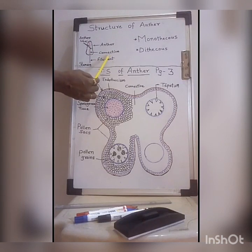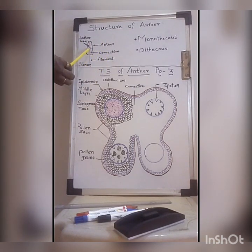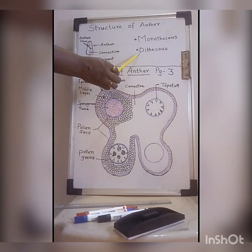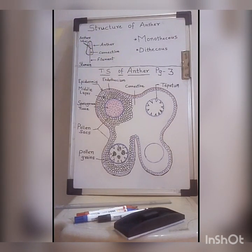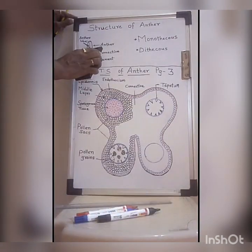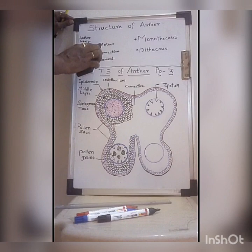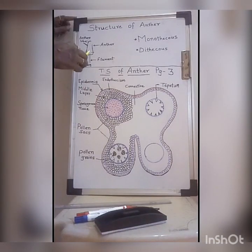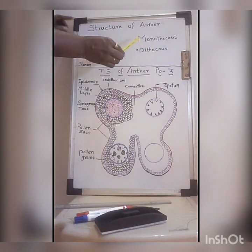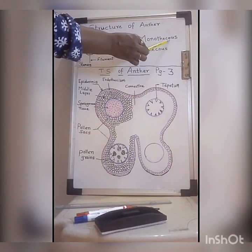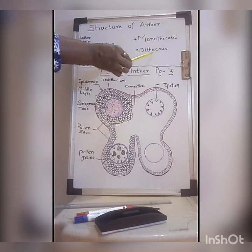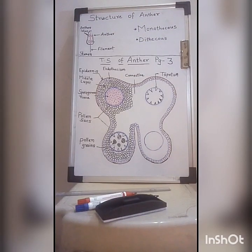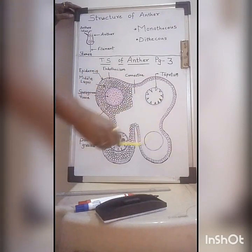The two lobes are connected with the help of a connective. When there are two lobes in an anther, the condition is called dithecous. But if there is only one anther lobe, that condition is called monothecous — mono means one and theca means lobe, di means two and theca means lobe. Now we will see the structure of the transverse section of anther.